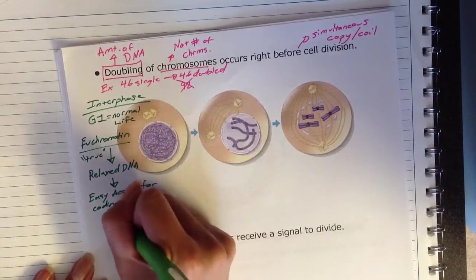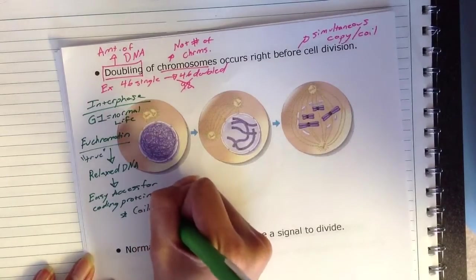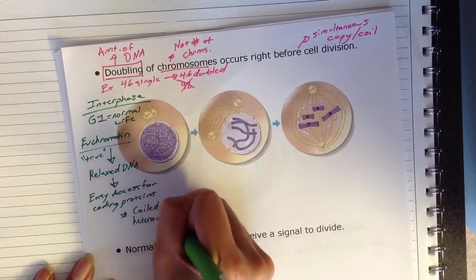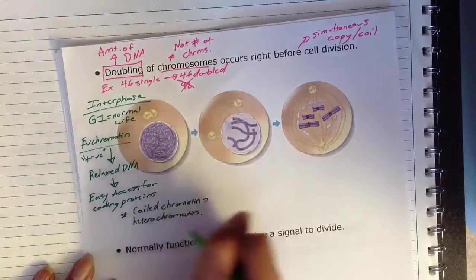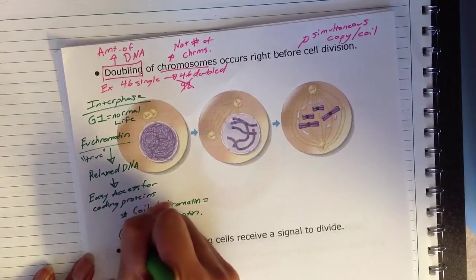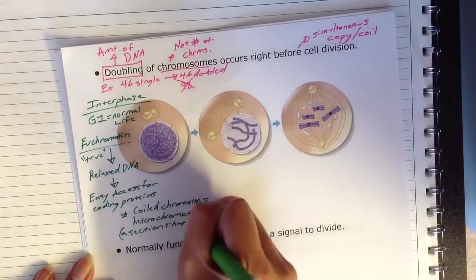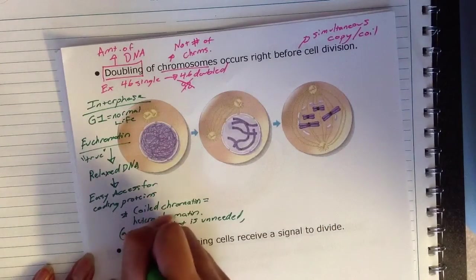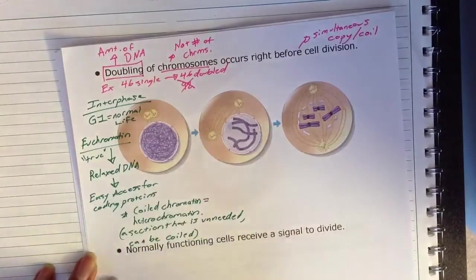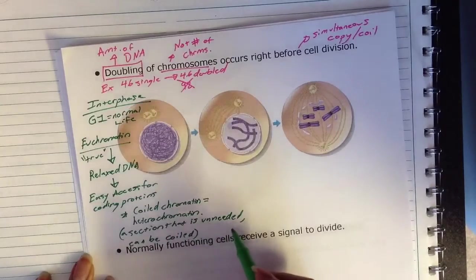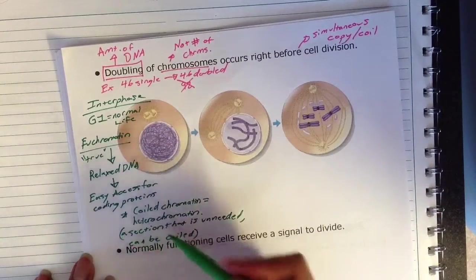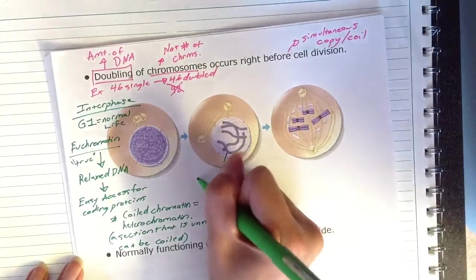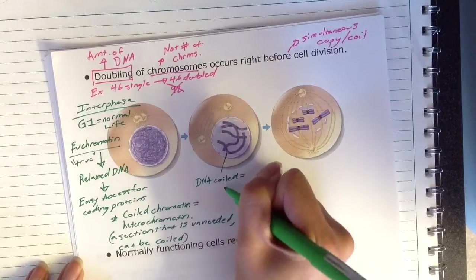Now, the other thing, however, is that your coiled chromatin can also be known as sometimes heterochromatin. And heterochromatin is actually going to be a section that is unneeded, or we probably could have said not needed, that can be coiled. So within your chromatin, you have heterochromatin. Heterochromatin is a section that is not needed for the protein code, and it could stay coiled up, but it doesn't have to be. And so in here, we have our DNA is coiled, and some of that could be heterochromatin.